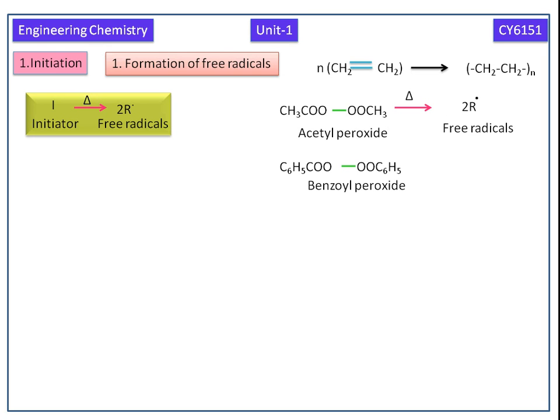Next we see benzoyl peroxide. Here also we get radicals in the presence of thermal condition. This is AIBN, that is azobisisobutyronitrile. Here we can see how the bond breaking occurs in the presence of thermal condition. It gives free radicals with the elimination of N2.